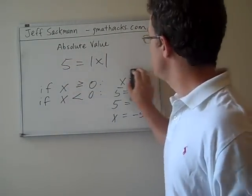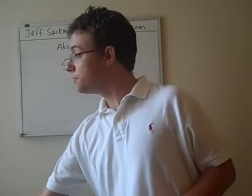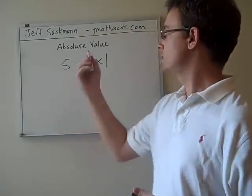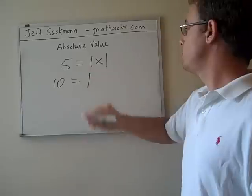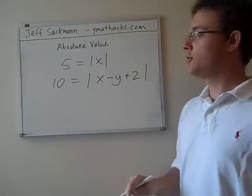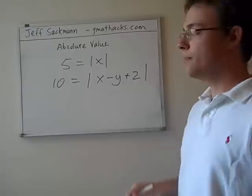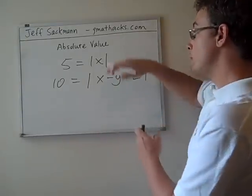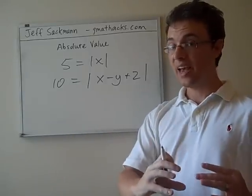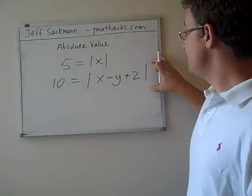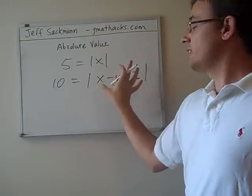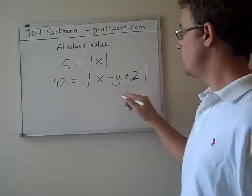That's your overview of how to deal with variables inside absolute value signs. What's inside the absolute value signs can be treated the same way. Let's say we have something more complicated, like 10 equals the absolute value of x minus y plus 2. It's a good example of how complicated things could get. The difference is we're dealing with this entire unit. The entire unit has to be positive or negative.